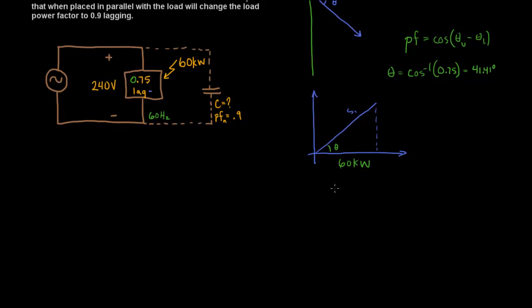Remember that cosine is the adjacent over the hypotenuse. So if I want to find the hypotenuse, which is S1, S1 simply equals 60k over the cosine of theta. Well, we already know the cosine of theta, it's 0.75.